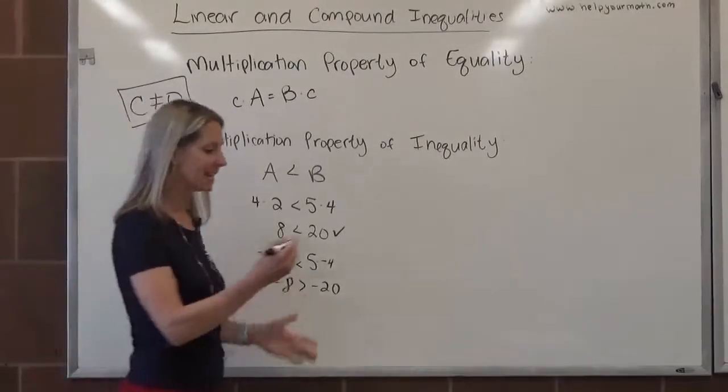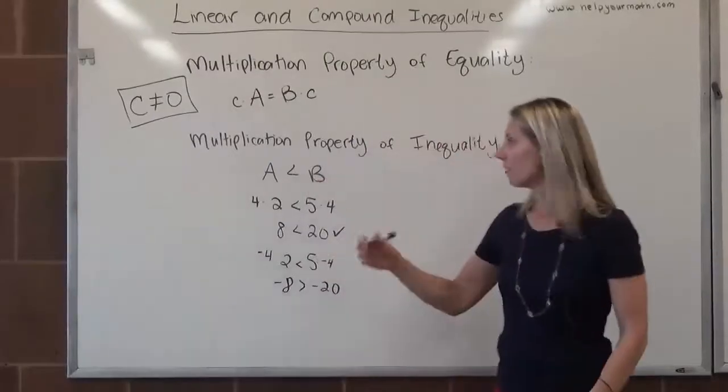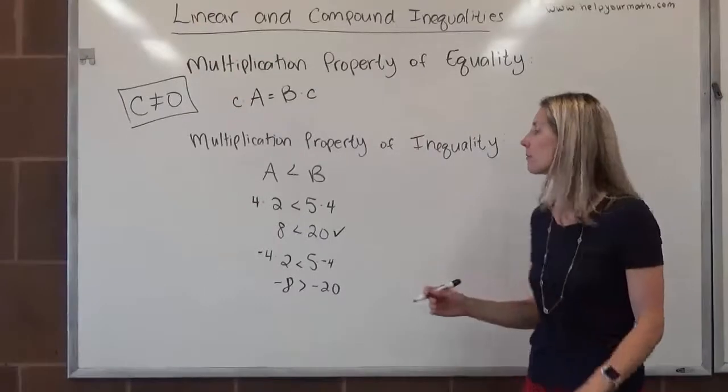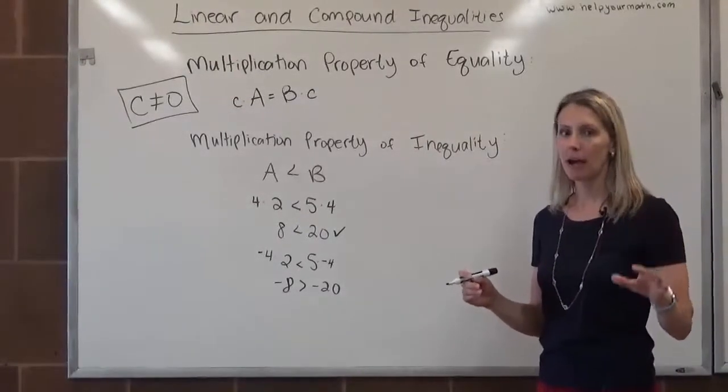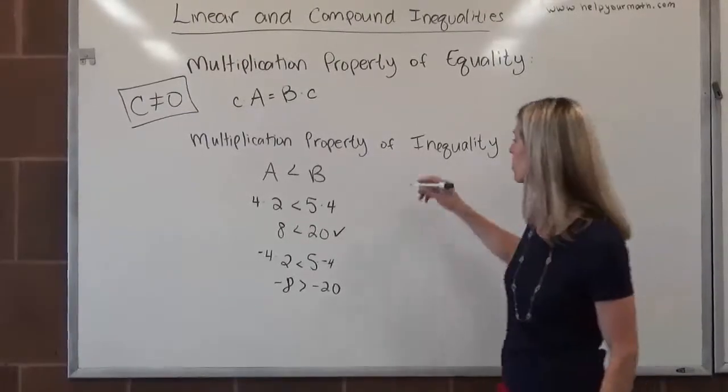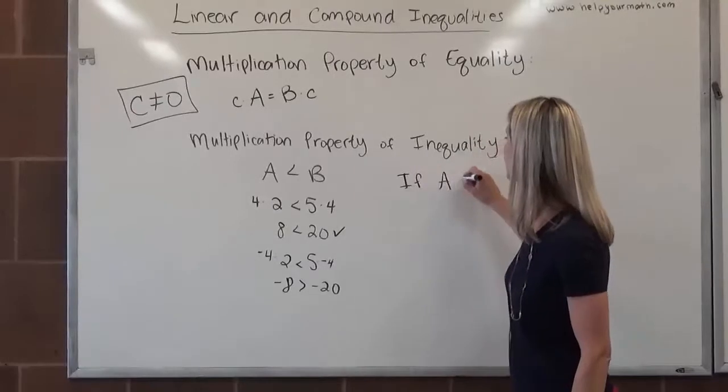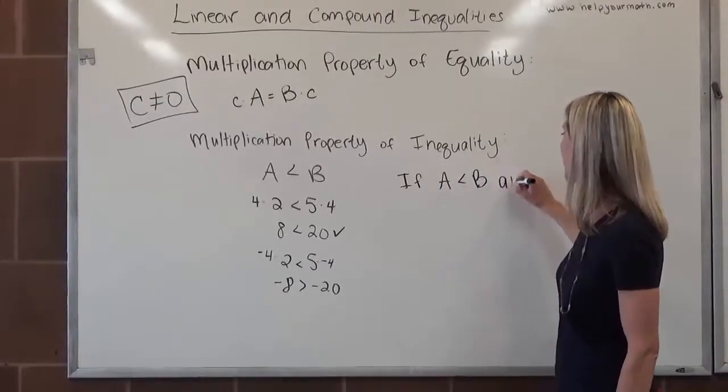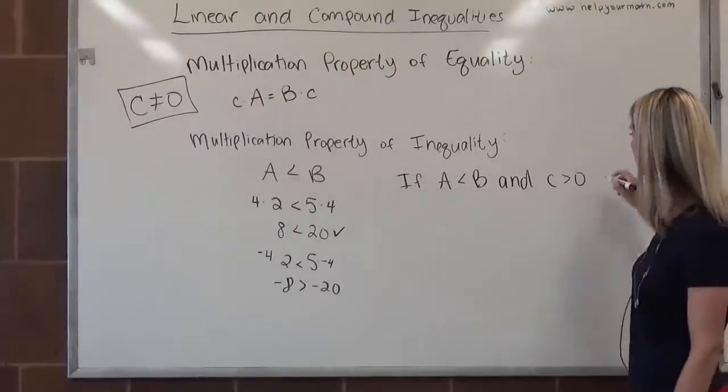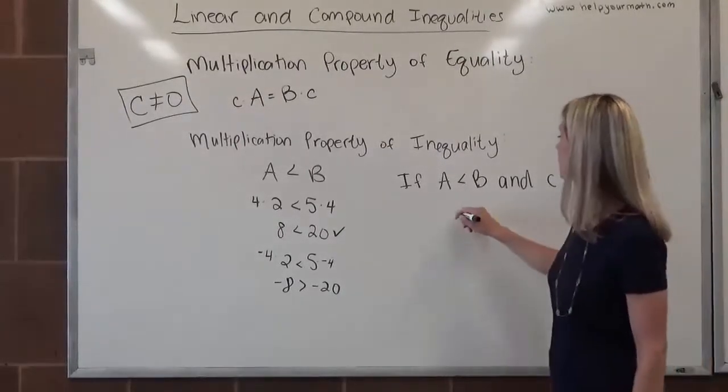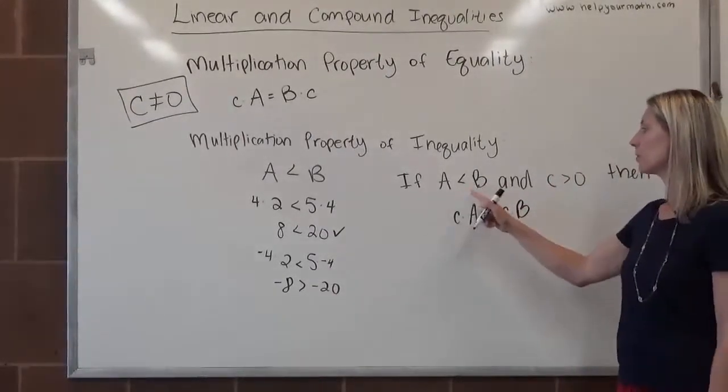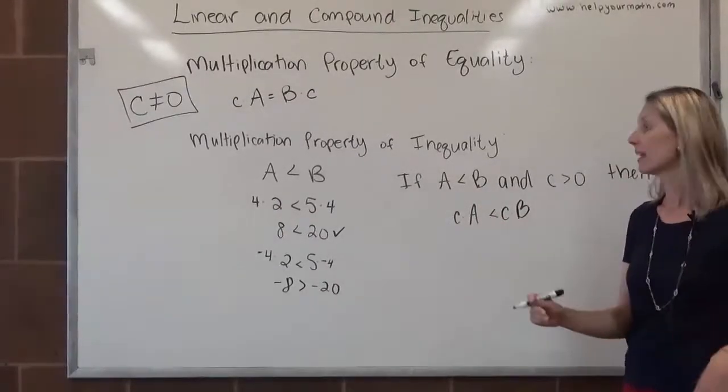So the multiplication property of equality states, if we have a true inequality, this is less than this, or this is greater than this, or this is less than or equal to this. And you multiply both sides by something positive, it maintains that inequality. So there's nothing special there, still true. So we can say if A is less than B and we're going to say C is greater than zero, so that just indicates C is positive, then C times A is still less than C times B.